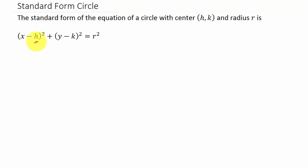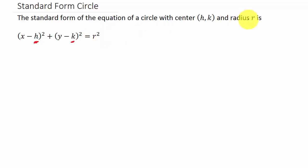So we can see that h gives us the x-coordinate of the center, and k gives us the y-coordinate of the center. Then whatever number is on the right side, the square root of that number is our radius r.